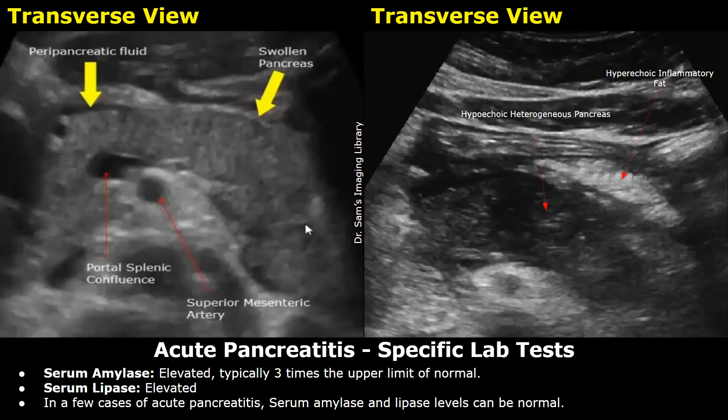Two main blood tests are used: serum amylase and serum lipase. Usually in acute pancreatitis, serum amylase is elevated — typically three times the upper limit of normal — and serum lipase is also elevated. These elevated values strongly suggest pancreatitis.